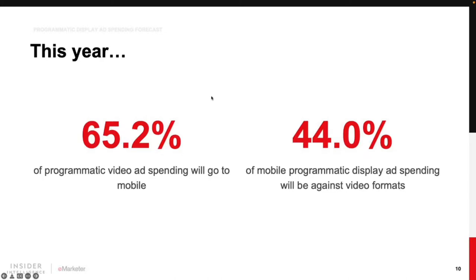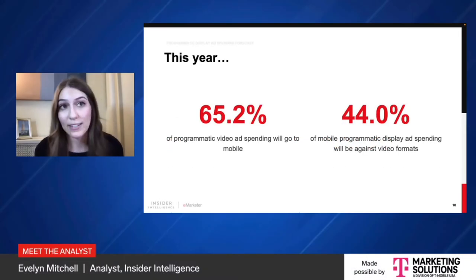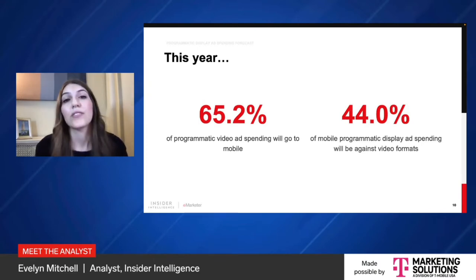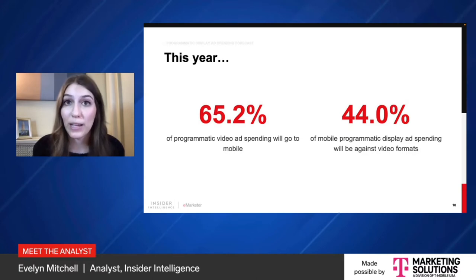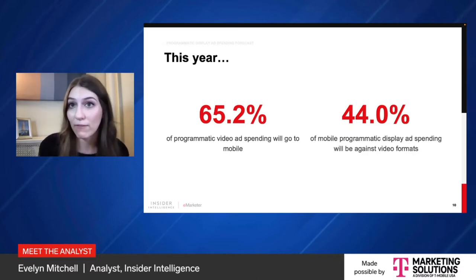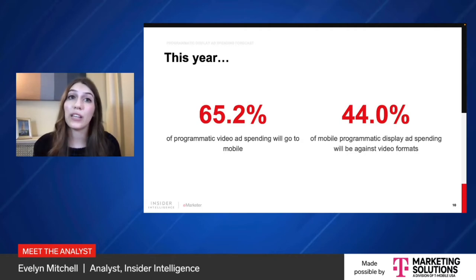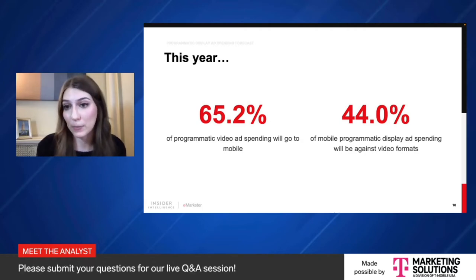Most programmatic video ad spending goes to mobile — 65.2% in 2022. Looking at mobile in silo, spending against non-video formats actually accounts for more than half of programmatic digital display ad spending. However, given the increasing interest in short-form video-based platforms like TikTok among advertisers, we anticipate video will continue to gain share of mobile programmatic display ad spending.